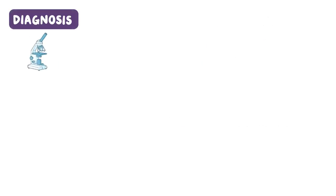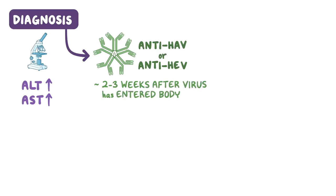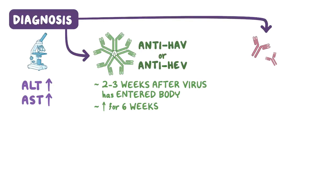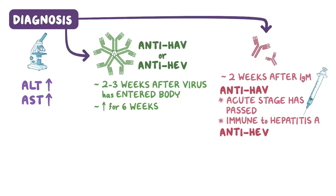Diagnosis requires lab studies. Liver enzymes alanine transferase (ALT) and aspartate transferase (AST) are much higher than normal. Diagnosis is confirmed in the presence of IgM-type anti-HAV or anti-HEV antibodies. IgM antibodies appear around two to three weeks after the virus has entered the body and remain elevated for about six weeks. IgG antibodies appear about two weeks after IgM. Anti-HAV IgG antibody finding means the acute stage of the disease has passed and that the individual is now immune to hepatitis A; it is also found after vaccination. Anti-HEV IgG antibodies persist for a long time as well, but it's uncertain if they provide lifelong immunity against hepatitis E.